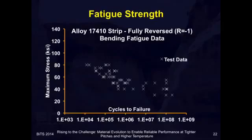Now, this is 174.10 strip. This is a low-strength, high-conductivity copper beryllium. It would not be used in BITS applications, but I chose it because they have a lot of data on it. It can really illustrate this point very well.